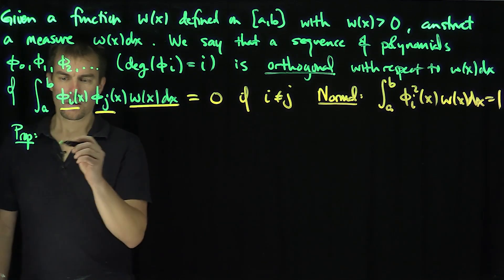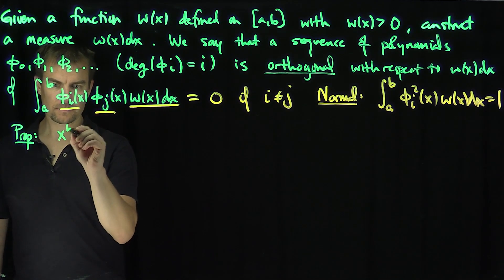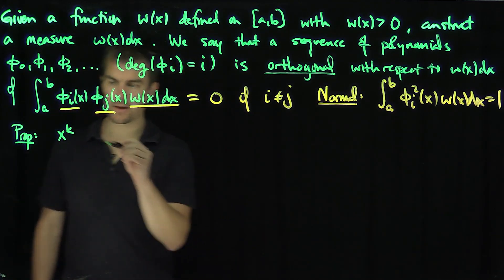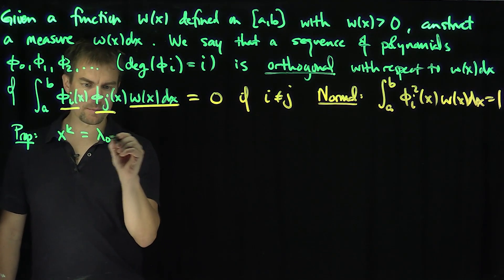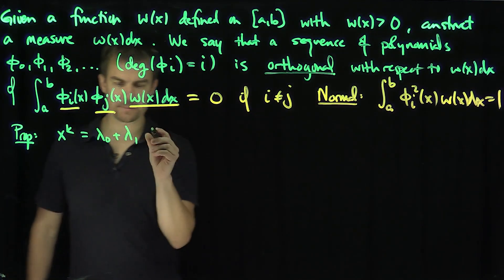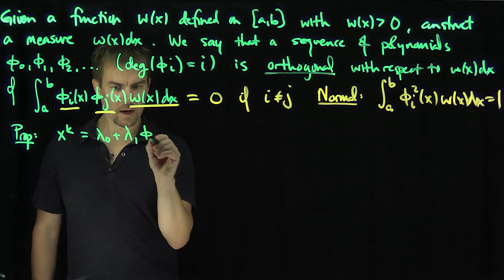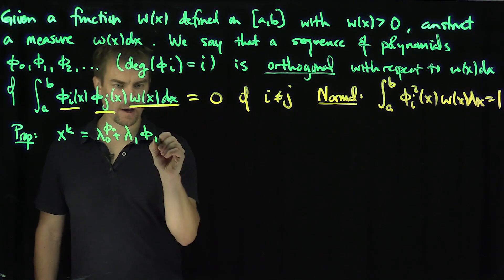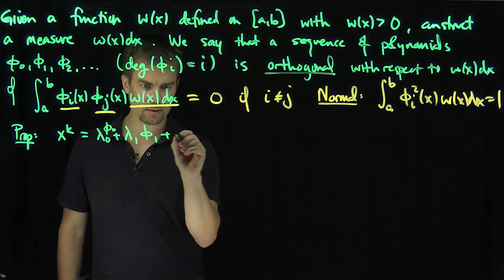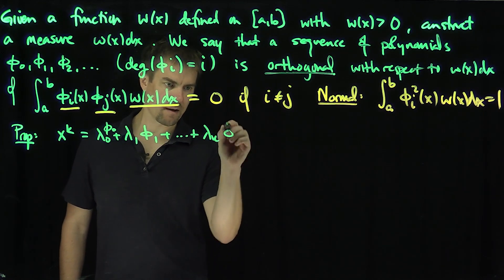x^k, just the monomial x to the k, can be written as a combination λ₀φ₀ + λ₁φ₁ + ... + λₖφₖ.